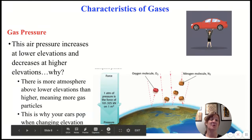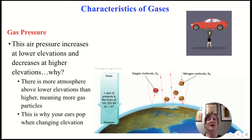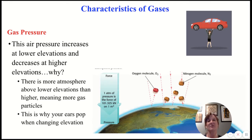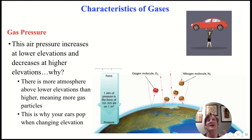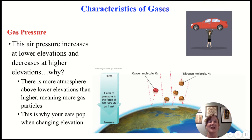So if gas pressure is caused by collisions, why does air pressure increase at lower elevations and decrease at higher elevations? This is because there is more atmosphere at lower elevations and less atmosphere at higher elevations. If you're standing at sea level, you have much more air on top of you than if you're standing on top of Mount Everest. The closer you are to the Earth's surface, the stronger the gravitational attraction, so the Earth holds more gas closer to its surface. As we increase in elevation, that gravitational force decreases and the Earth holds on to less gas.